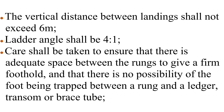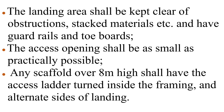The vertical distance between landings shall not exceed 6m. Ladder angle shall be 4 to 1. Care shall be taken to ensure that there is adequate space between the rungs to give a firm foothold, and that there is no possibility of the foot being trapped between a rung and a ledger, transom or brace tube. The landing area shall be kept clear of obstructions, stacked materials, etc., and have guard rails and toe boards.